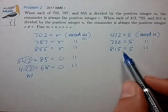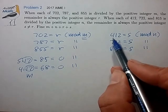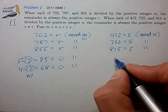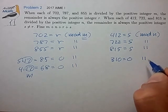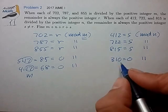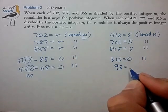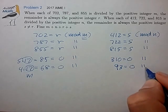So let's do the same thing for the right case. Let's take 722 minus 412. That tells us that 310 is equal to 0 mod n. The third minus the second, we have that 93 is equal to 0 mod n.